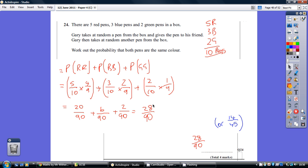That's 28 over 90. That would have given you 4 marks, but you could have simplified it by halving top and bottom to get 14 over 45.